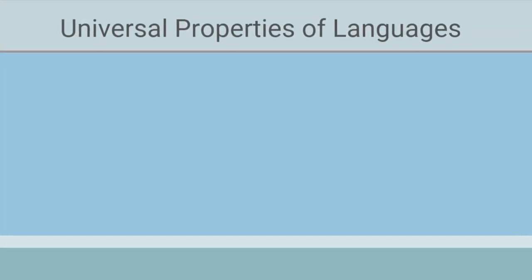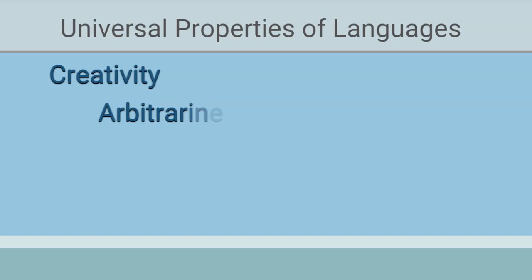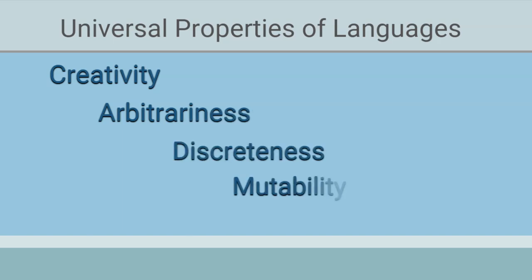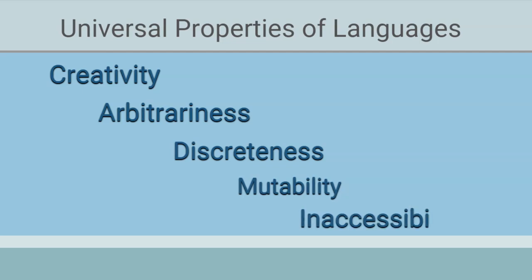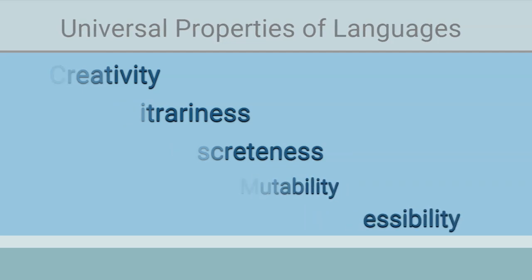There are five universal properties of languages, namely creativity, arbitrariness, discreteness, mutability, and inaccessibility.